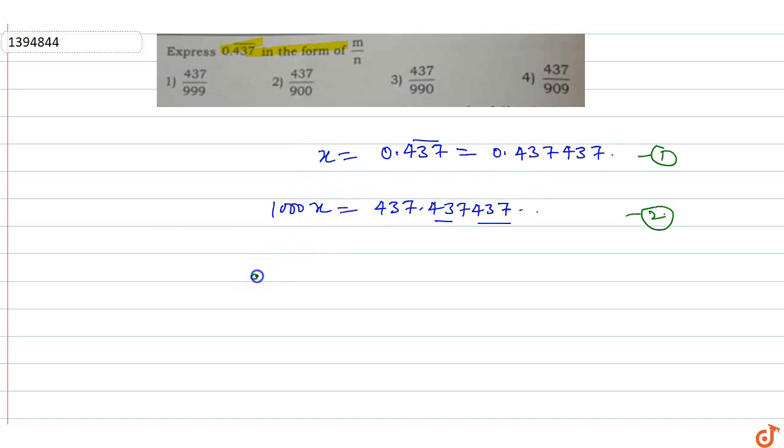1000x minus x equals 999x, which equals 437.437437... minus 0.437437...